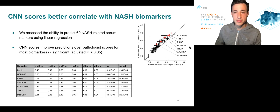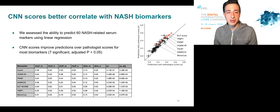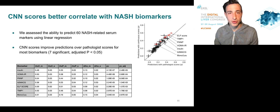Note that in this plot, each point is a biomarker. As you can see, the continuous scores improved predictions over the pathology scores for most biomarkers, with significant differences observed for seven biomarkers, including the Enhanced Liver Fibrosis score.